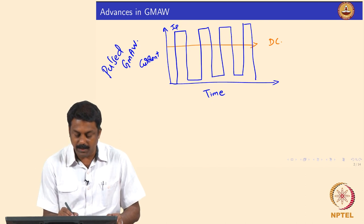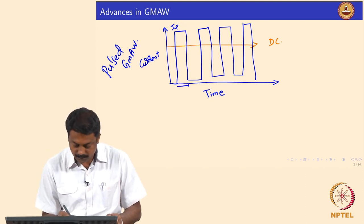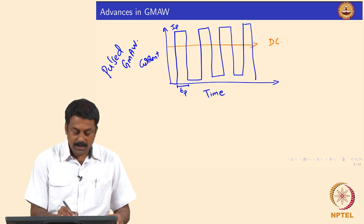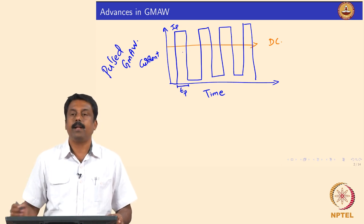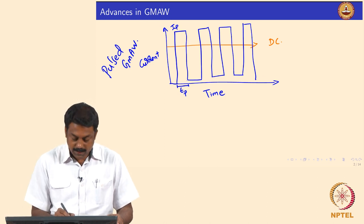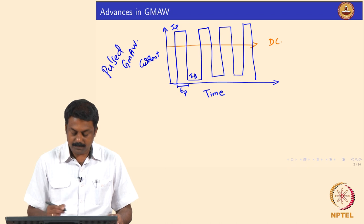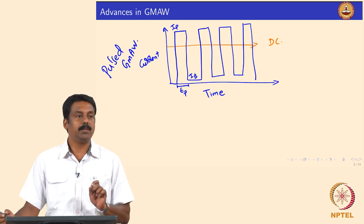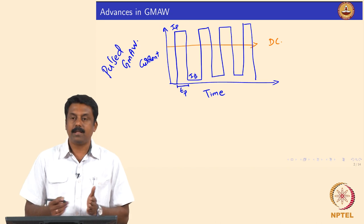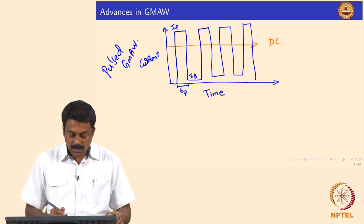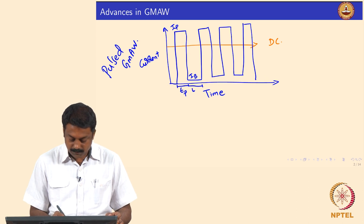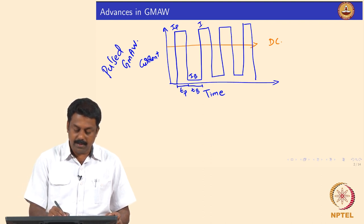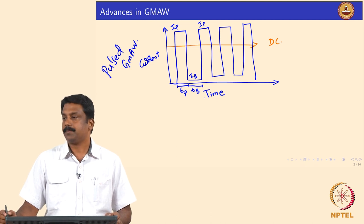During the pulsing period TP, we increase the current to IP and one droplet is detached. The current is then decreased to a background level IB, maintaining a very small arc with very low power. This background current is sufficient to maintain the arc, then after background time TB we raise the current again to IP to detach another droplet.